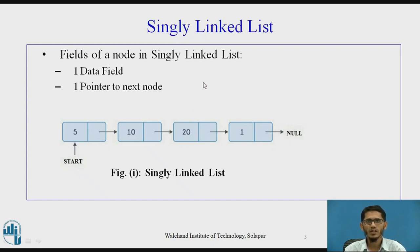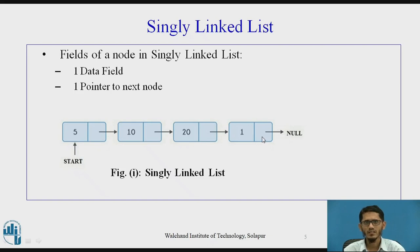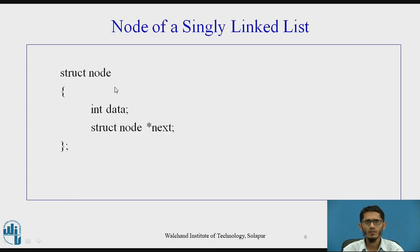In a singly linked list, there is a data field and one pointer to the next node, whereas a doubly linked list has two pointers. Here we have a diagram showing a singly linked list with nodes containing data 5, 10, 20, 1, and so on. Every node has a next pointer pointing to the next node, and the last node's next pointer points to null. To implement this in C, we use struct node with an integer data field and a struct node star next pointer.